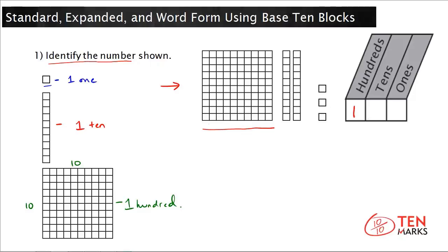I'll put the digit 1 in the hundreds column here. The next thing I notice is that this number has two tens rods, or the number has two tens. And lastly, I'm going to count the ones.